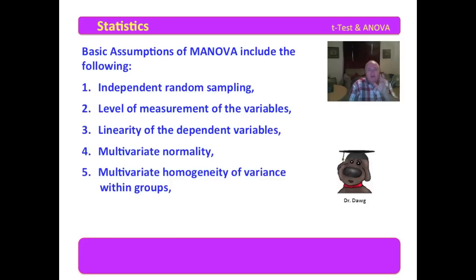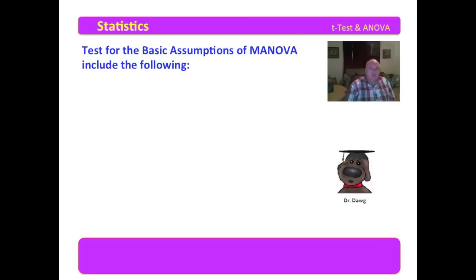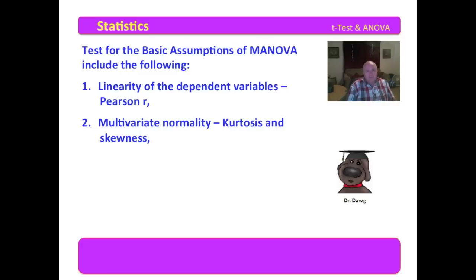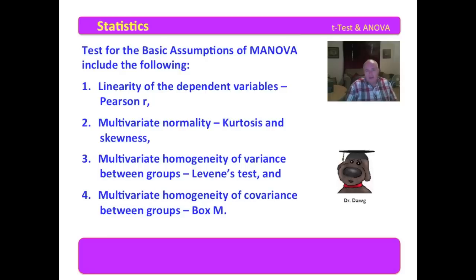We must also have multivariate homogeneity of variance within groups and between groups. The tests for the basic assumptions of MANOVA include the following. Sampling and data distributions are easily under your control. For linearity of the dependent variables, we run a Pearson R or some correlational coefficient. For normality of the dependent variables, we do kurtosis and skewness as we did with ANOVA. For multivariate homogeneity of variance between groups, we'll use Levene's test. And for multivariate homogeneity of covariance between groups, we'll use Box's M.